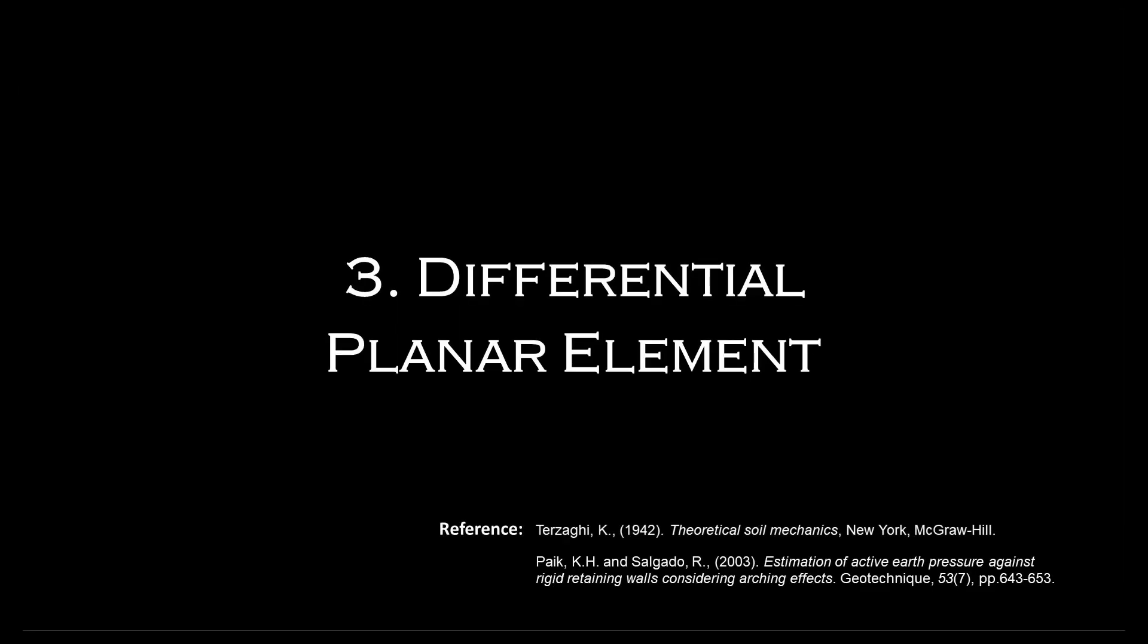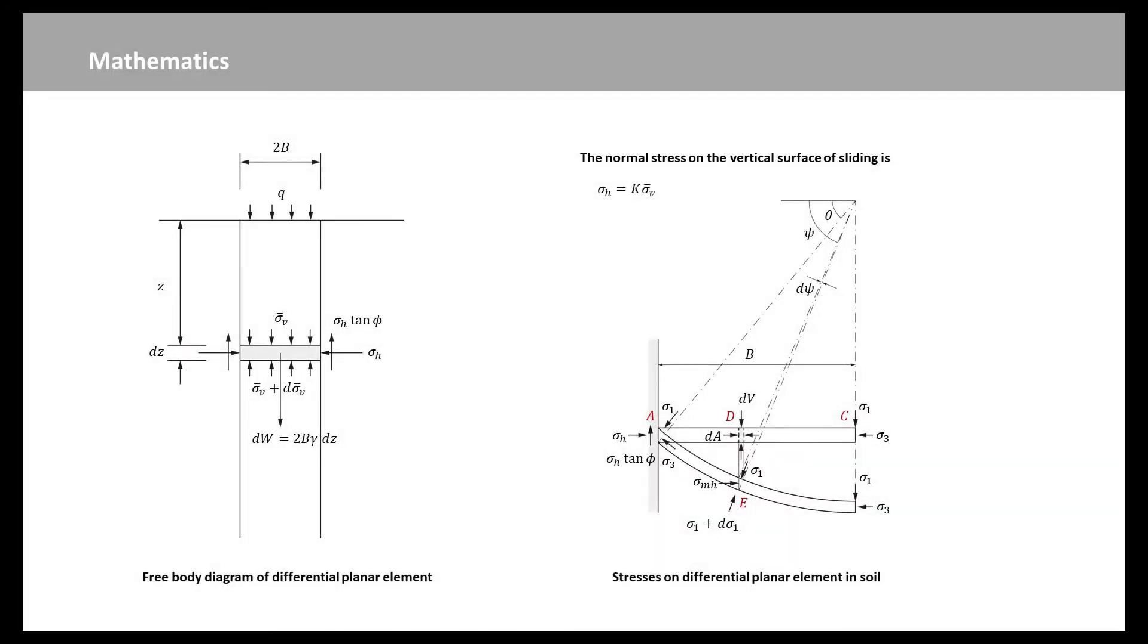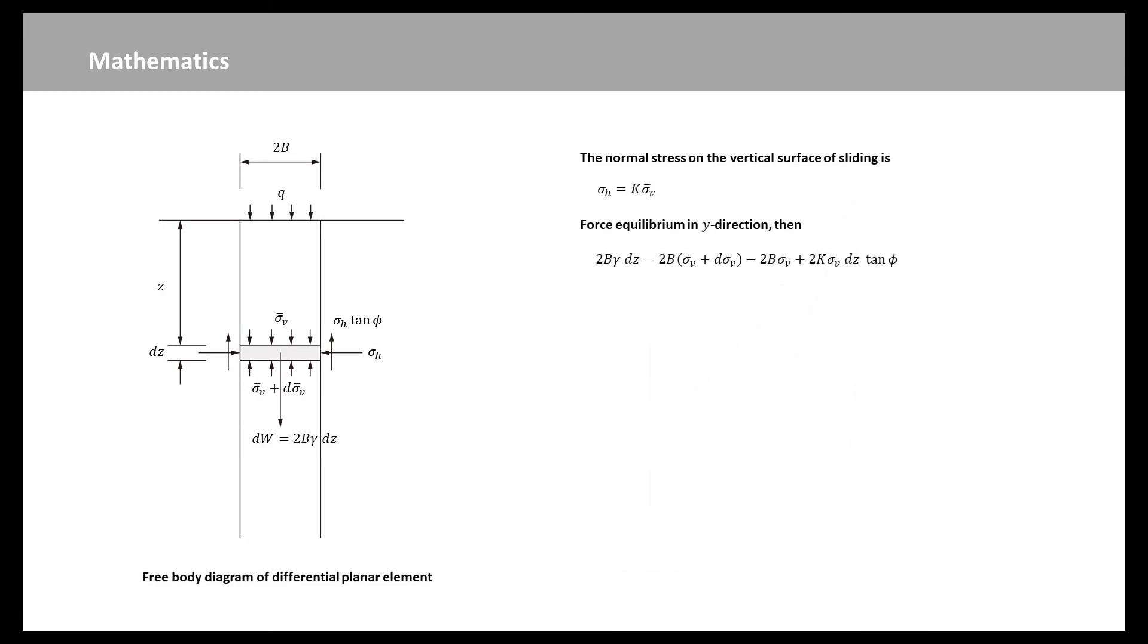Now we know the active lateral stress ratio. Next, we will derive equations for the earth pressures. This figure shows the stresses acting on the differential planar element between two cuts. As mentioned previously, the major and minor principal stresses at the right edge of the half differential planar element must be applied in the vertical and horizontal directions respectively. At the left edge of the differential planar element, there is a non-zero shear stress along the cut, sigma-h times tangent-phi. The rectangular differential planar element with thickness dz is subject to the average vertical stress sigma-v bar, the shear stress sigma-h times tangent-phi on its interface with the cut, and the self-weight gamma of the element.